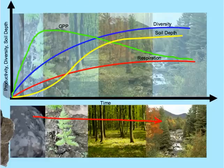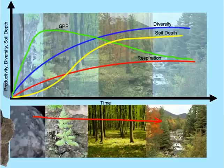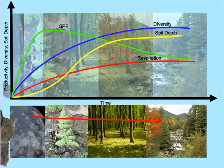Lichens growing on bare rock, together with abiotic factors, eventually work their way into the rock, creating a small platform of soil that allows ferns to become established. This process eventually leads to an even thicker, richer soil that allows trees and other plants to establish themselves. These trees take a long time — sometimes over a hundred years — to eventually give rise to the climax community.